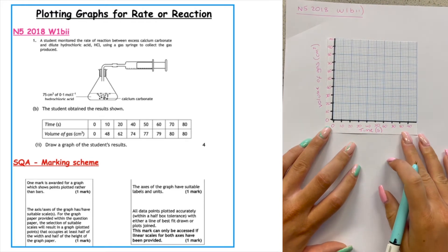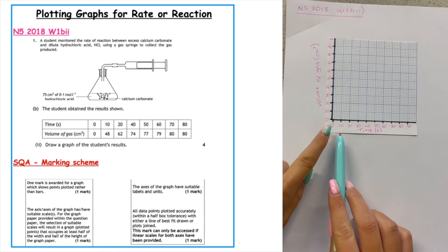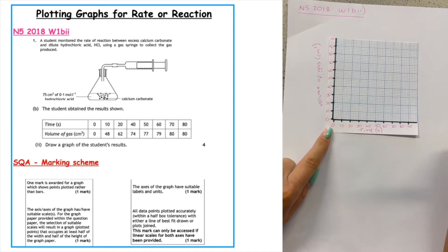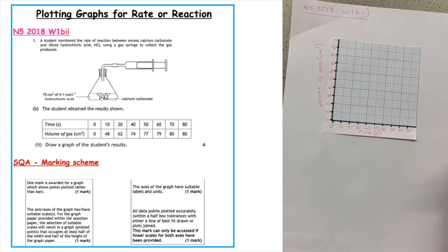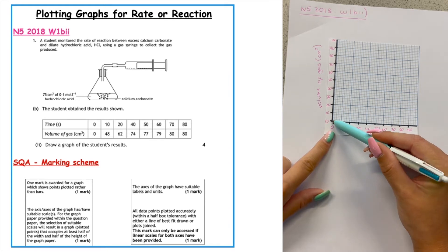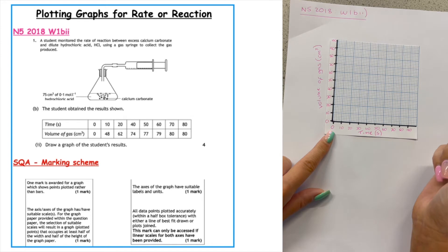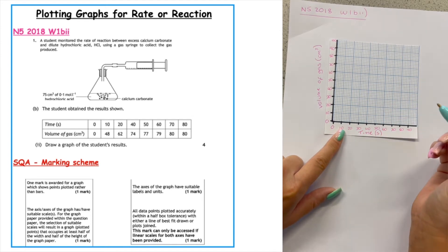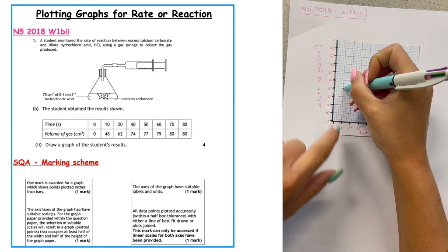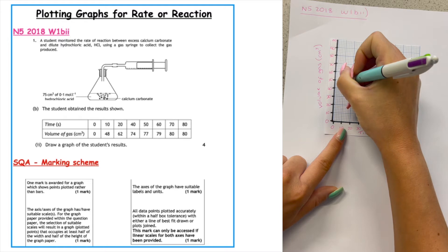Now we get a mark for drawing the appropriate graph. With number scales on both axes we're drawing a scatter graph. The first point is at time zero, volume zero — right where the two axes meet. At 10 seconds, volume is 48: go up to 40, then each of the five boxes between 40 and 50 is worth two, so count up 42, 44, 46, 48 and plot a point there. At 20 seconds, volume is 62: go up to 60 and one box more gives 62.